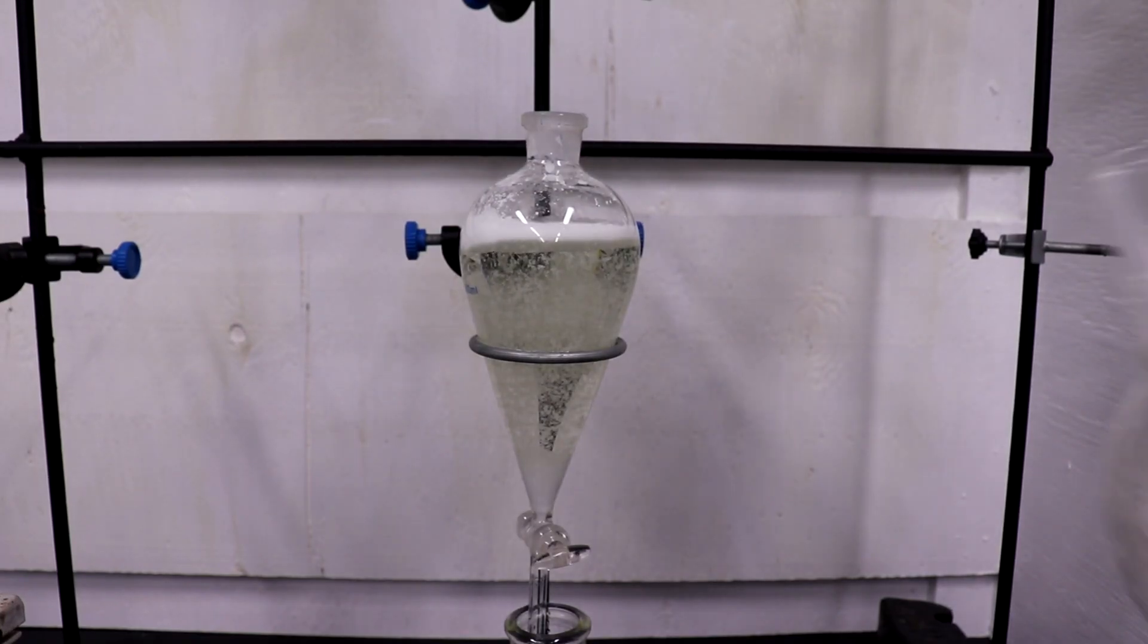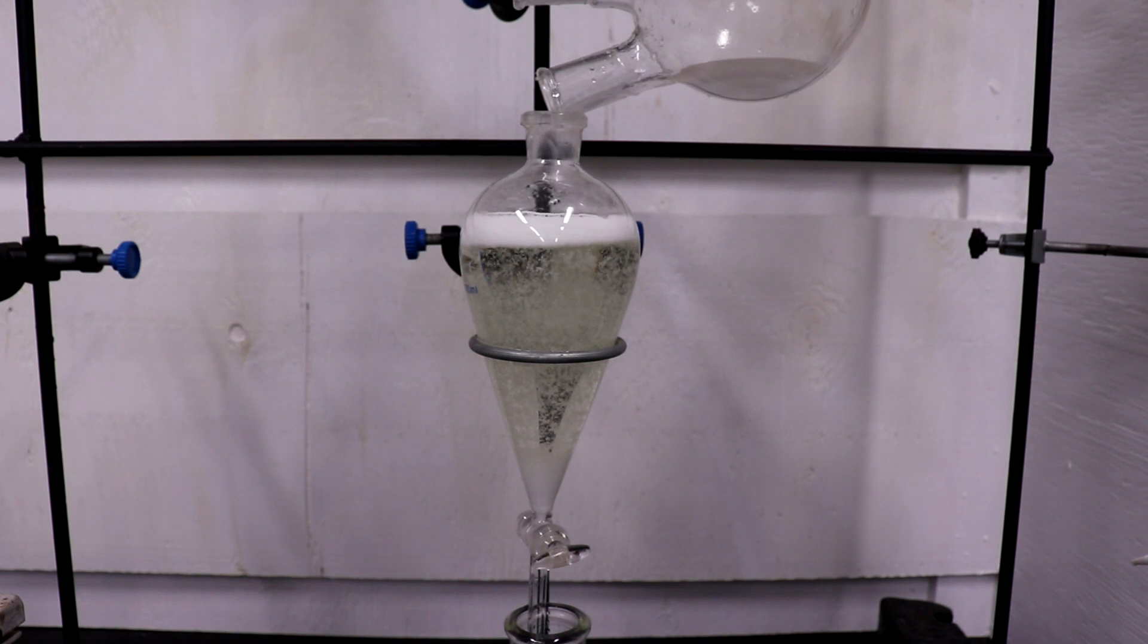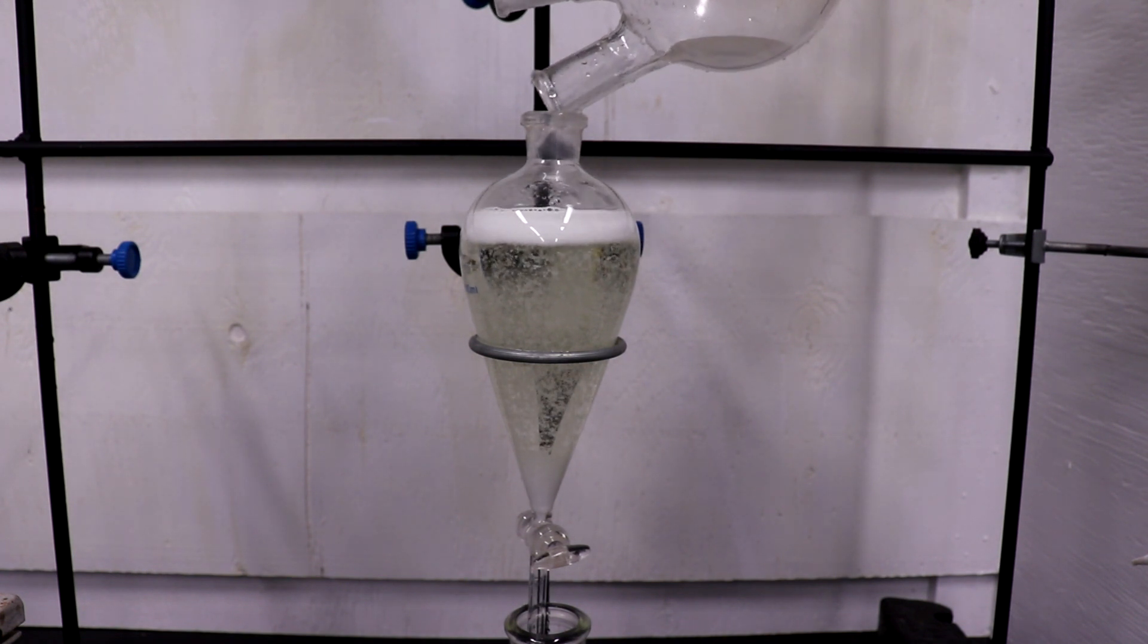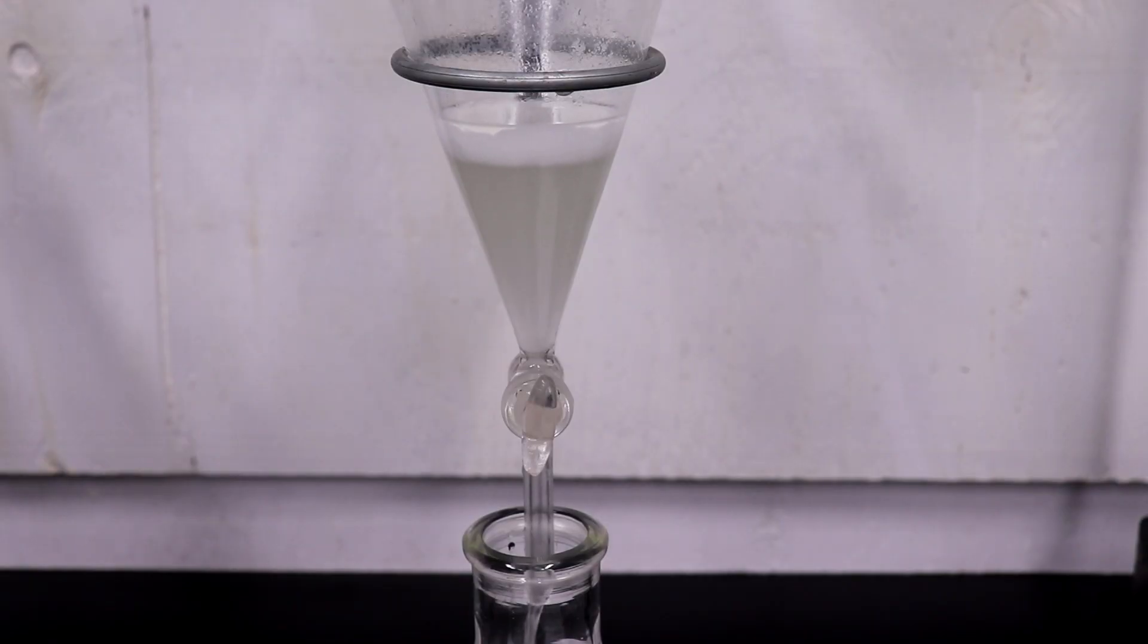The mixture was then extracted with 50 mils of ether and washed with 4 20-milliliter portions of ether. You can see some undissolved product in the ether layer, and to remedy that, you can just add some more ether to fully dissolve the product.